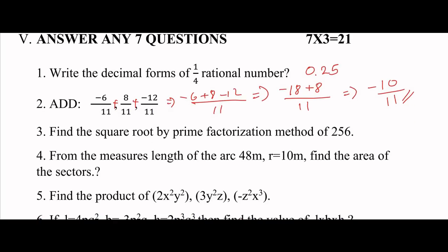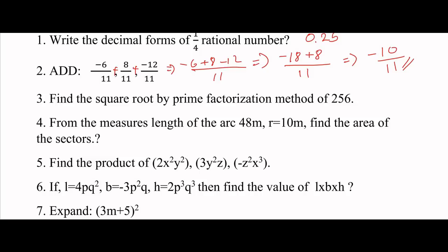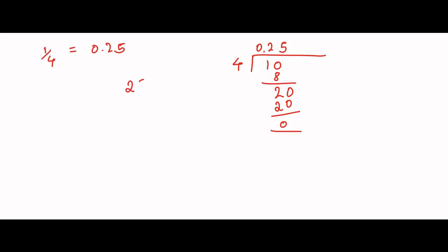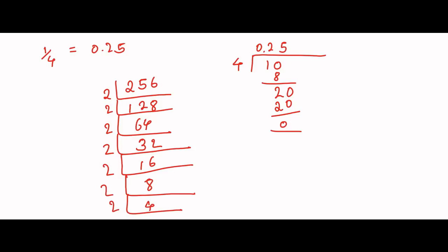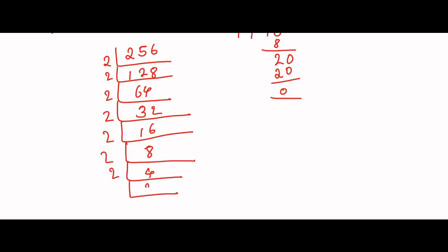Third one: find the square root of 256 by prime factorization method. We prime factorize 256 using the 2 times table: 256 = 2 × 2 × 2 × 2 × 2 × 2 × 2 × 2.